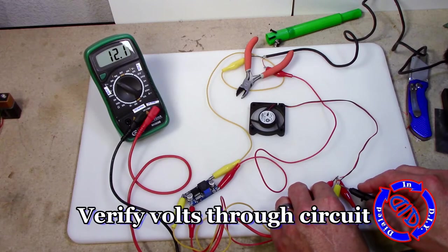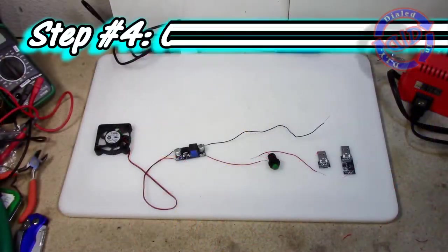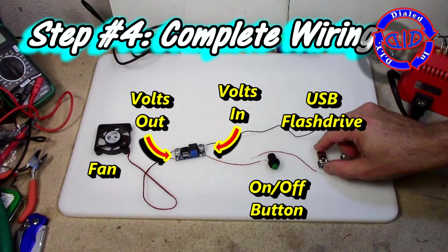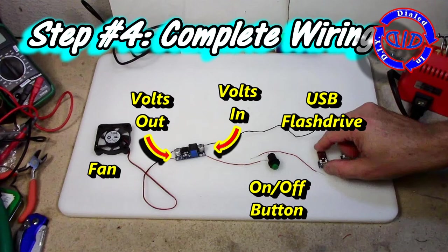Now that we have everything hooked up and running the fan looks great and a double check on the multimeter and we are indeed pulling 12 volts. So this is perfect and this takes us to step 4 showing how we're going to complete all of our wiring.